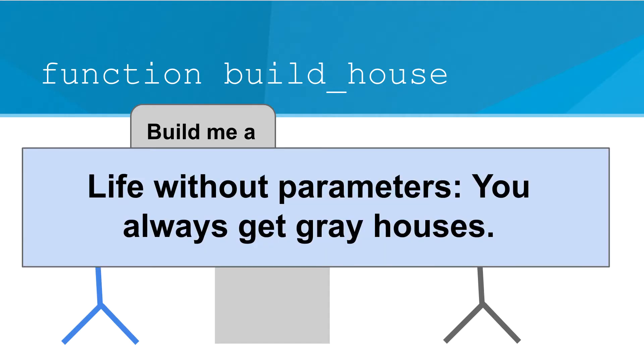The problem without parameters though, is that you always get gray houses. If you want to change the color of your house, you have no way to tell your friend how to do that.